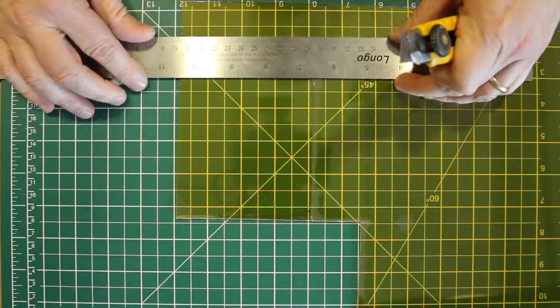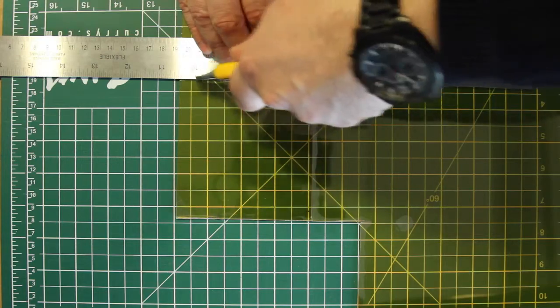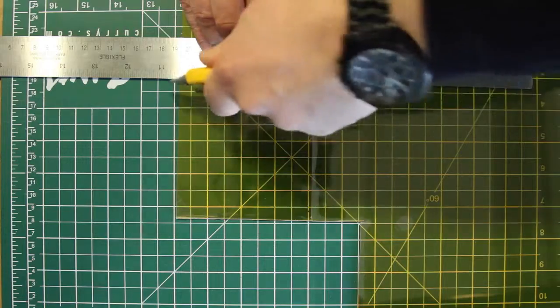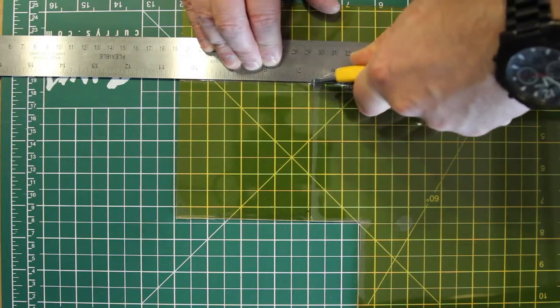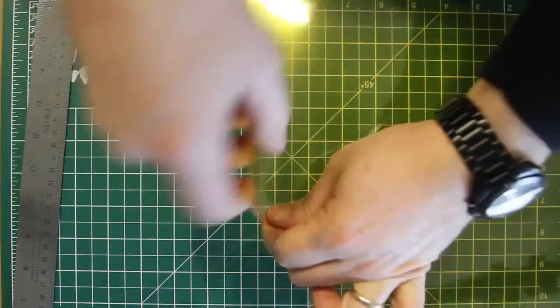And then the backing plastic as well. Same goes with this side, a couple of passes, and this piece should be ready to come off like so.